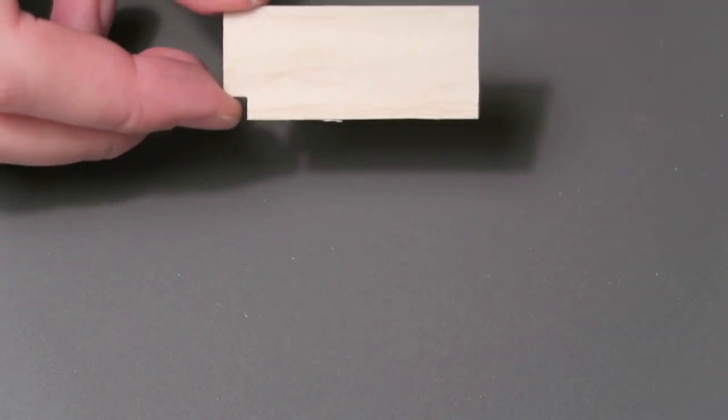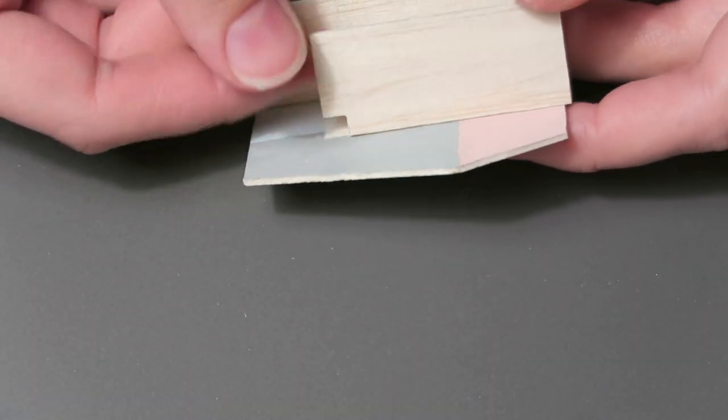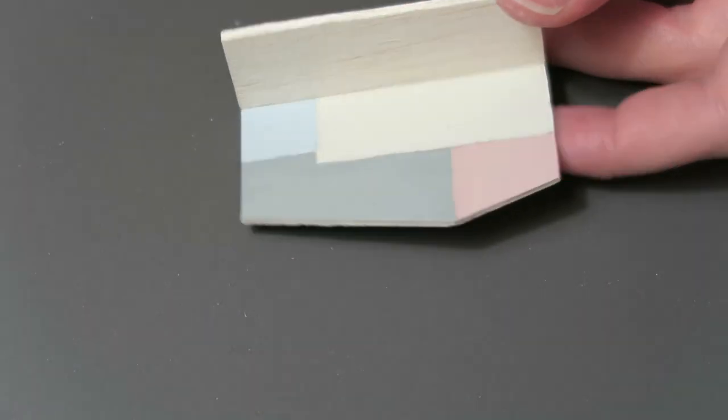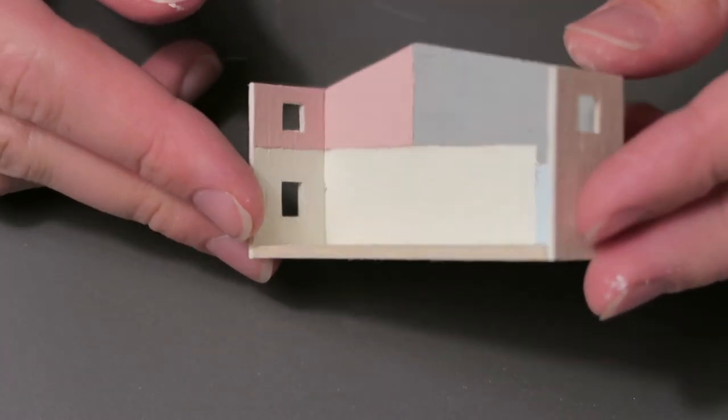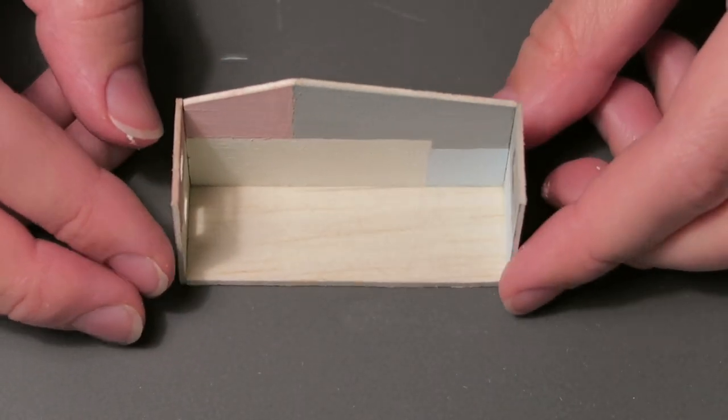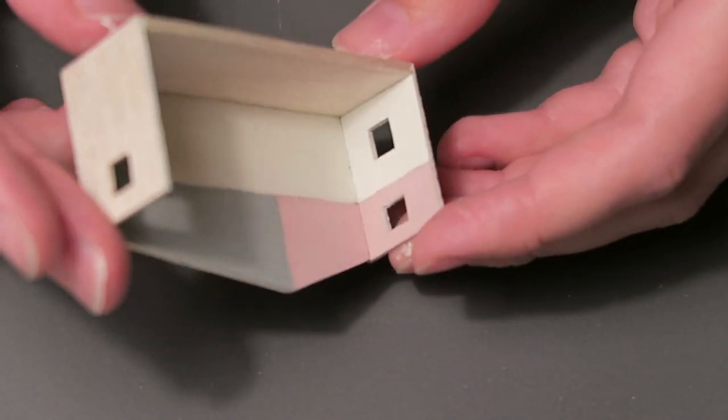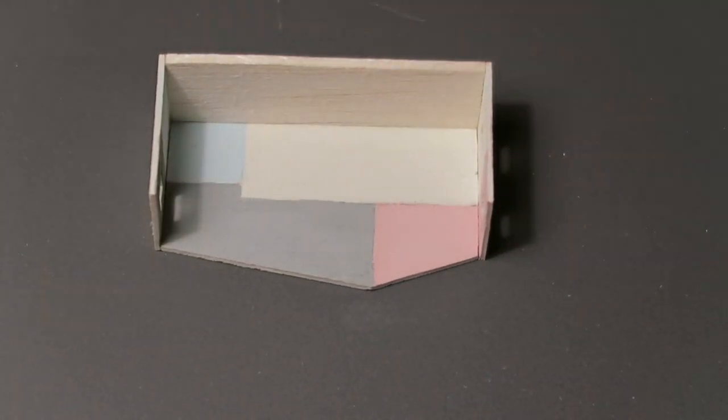I also cut a hole for the stairs in the top floor and the top of the bathroom wall. When you're done with the windows, it's time to glue the side walls into place, as well as the floor above the bathroom and the bathroom wall.